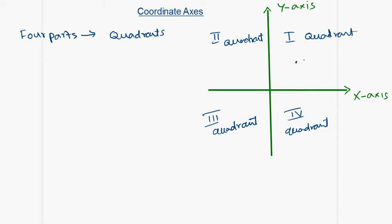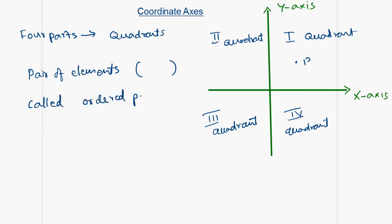Each point P in a plane is represented by a pair of ordered elements — a pair of elements enclosed in parenthesis called ordered pairs. For example, (x, y).